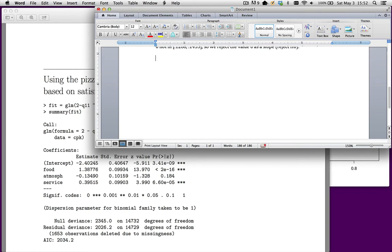My estimated regression equation looks like this: π equals the probability that a customer intends to return. The dependent variable is log(π/(1-π)) = -2.40 + 1.4×food - 0.13×atmosphere + 0.40×service. That's my estimated regression equation.